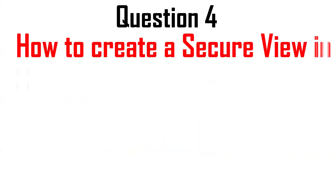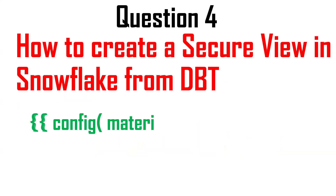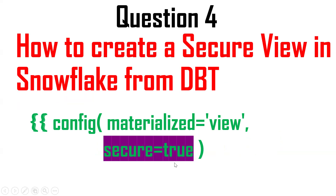Next question: how do I create a secure view from DBT in Snowflake? My requirement is to create a secure view. So we need to mention in the config: `materialized` equal to `view`, and we should mention `secure` equal to `true`. When `secure=true` is mentioned, a secure view will be created.